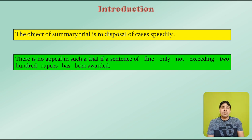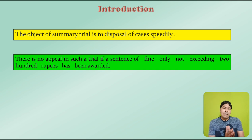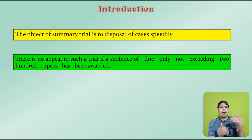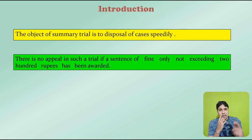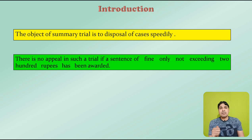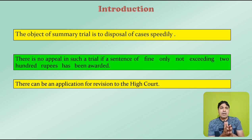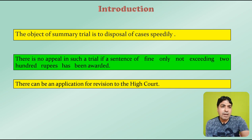There is no appeal in such a trial if a sentence of fine only not exceeding 200 rupees has been awarded. Suppose if the court passed the final order imposing a fine of up to 200 rupees, then against that order of court no appeal shall be possible. However, there can be an application for revision to the High Court.